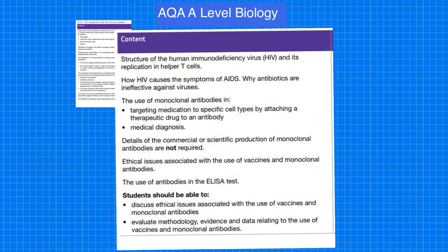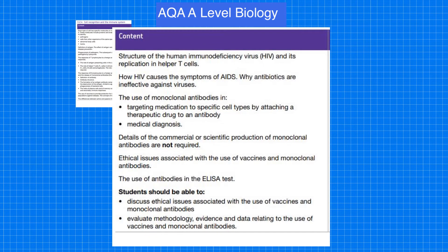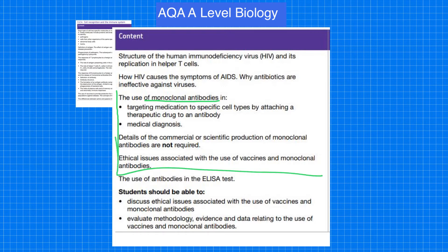Let's have a look at the spec — this is the second page of this unit. Since we have been talking about the specific immune system and the fact that B-cells produce monoclonal antibodies, we're going to talk about how you can actually do this within a laboratory setting, looking at how you can use it for new medicines and medical diagnosis, and also at the ethical issues related to the use of monoclonal antibodies.